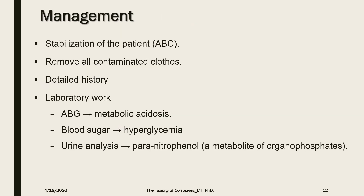Management of organophosphate cases starts by stabilizing the patient and checking the airways, breathing, and circulation, followed by removing all contaminated clothing — with caution to prevent harm to surrounding people. Occupational history is significant in these cases. Laboratory work includes arterial blood gases to detect metabolic acidosis, blood sugar to diagnose hyperglycemia, and urine analysis to detect paranitrophenol, which is a metabolite of organophosphates in urine.